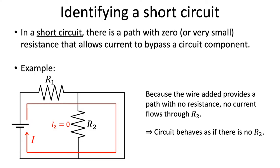In other words, none of the current flows through R2, and all of the current goes through the wire before returning to the battery. That means that this circuit behaves as if there is no R2.